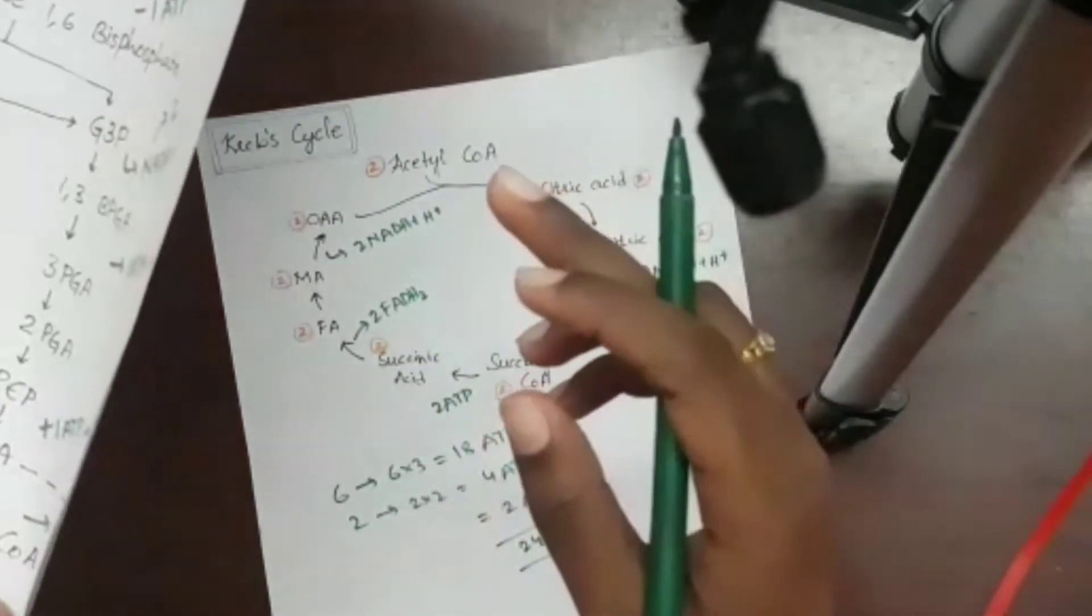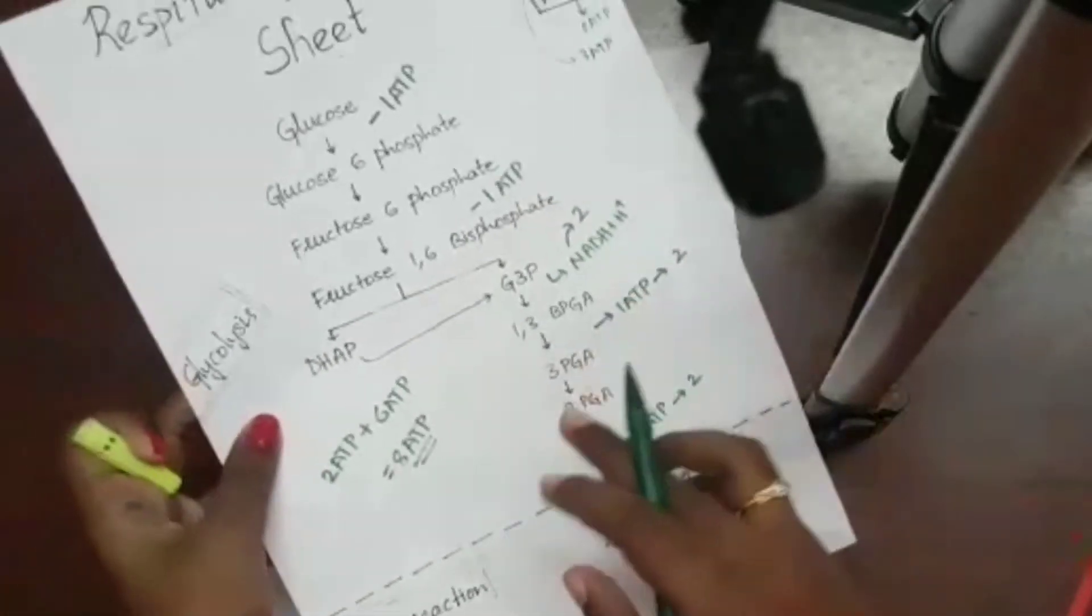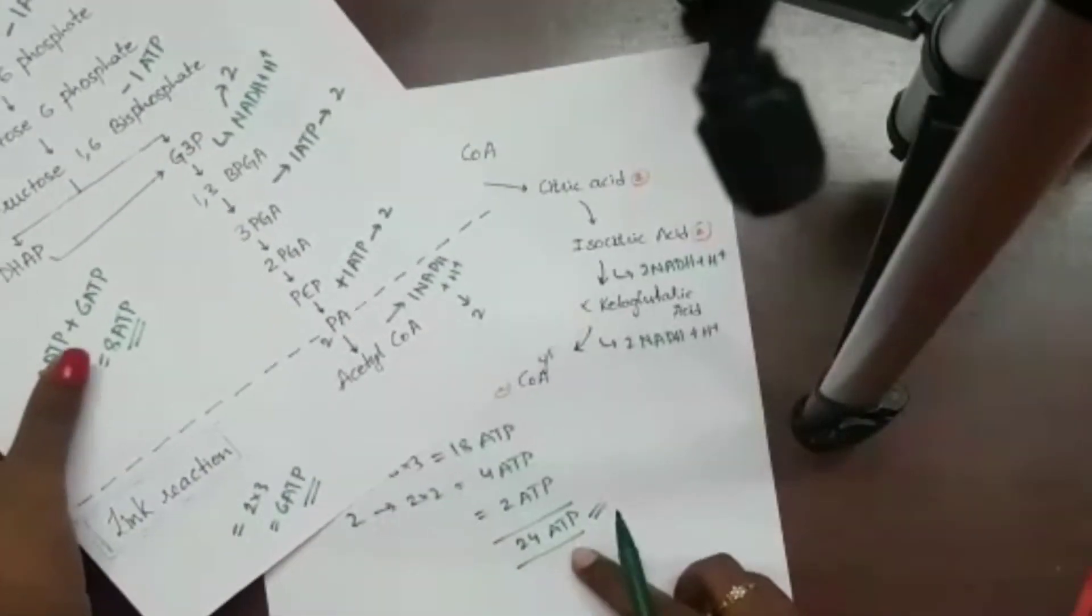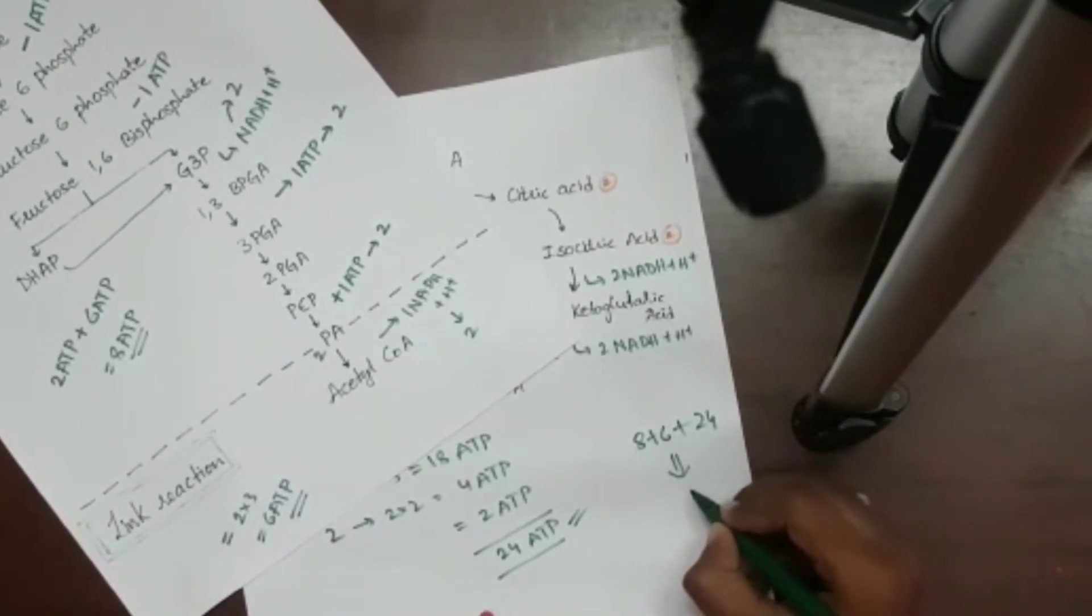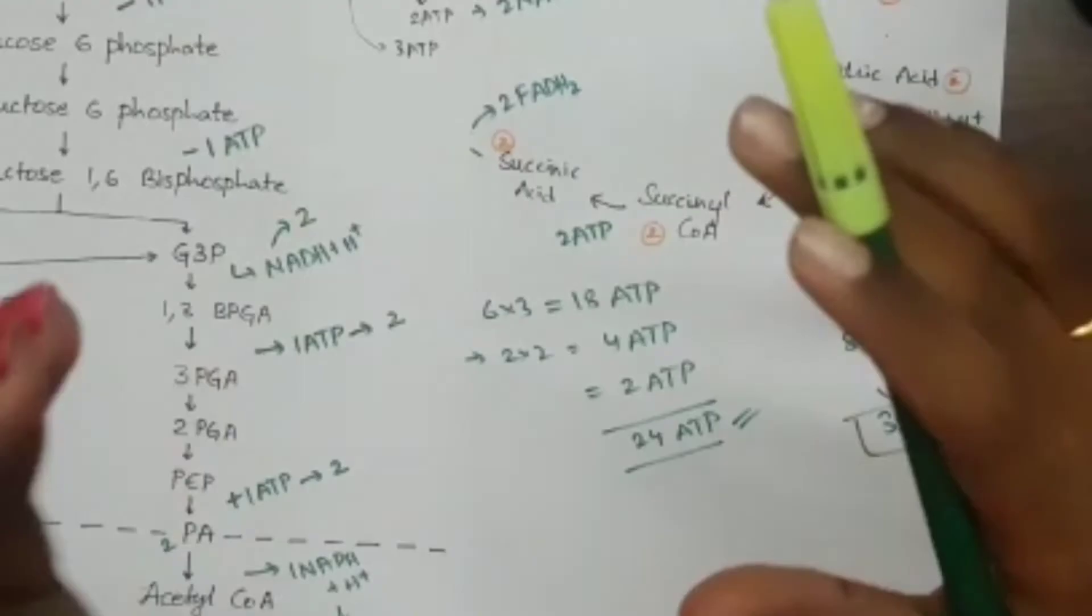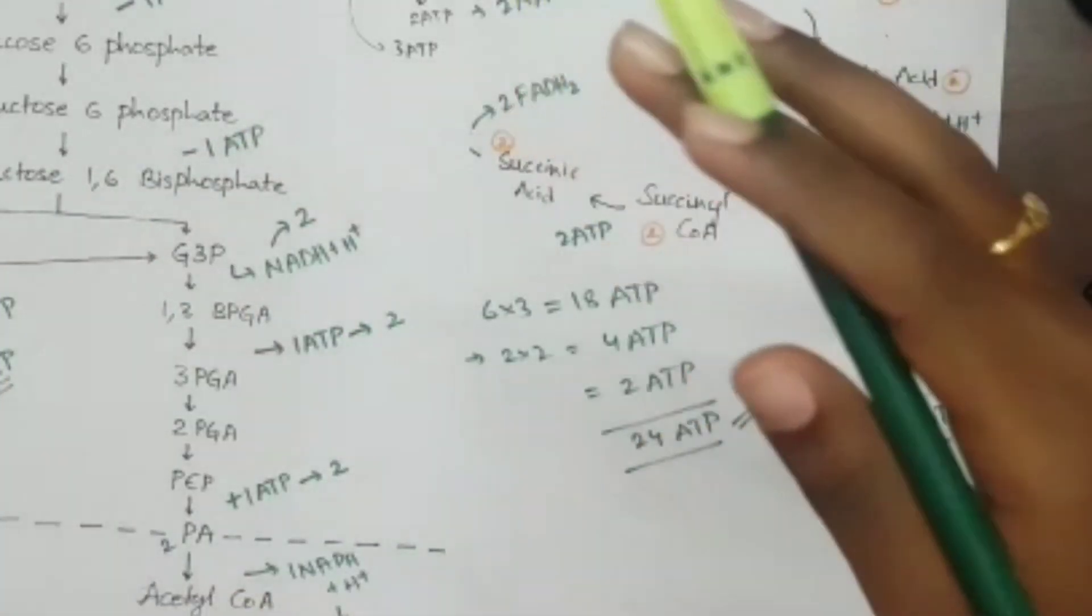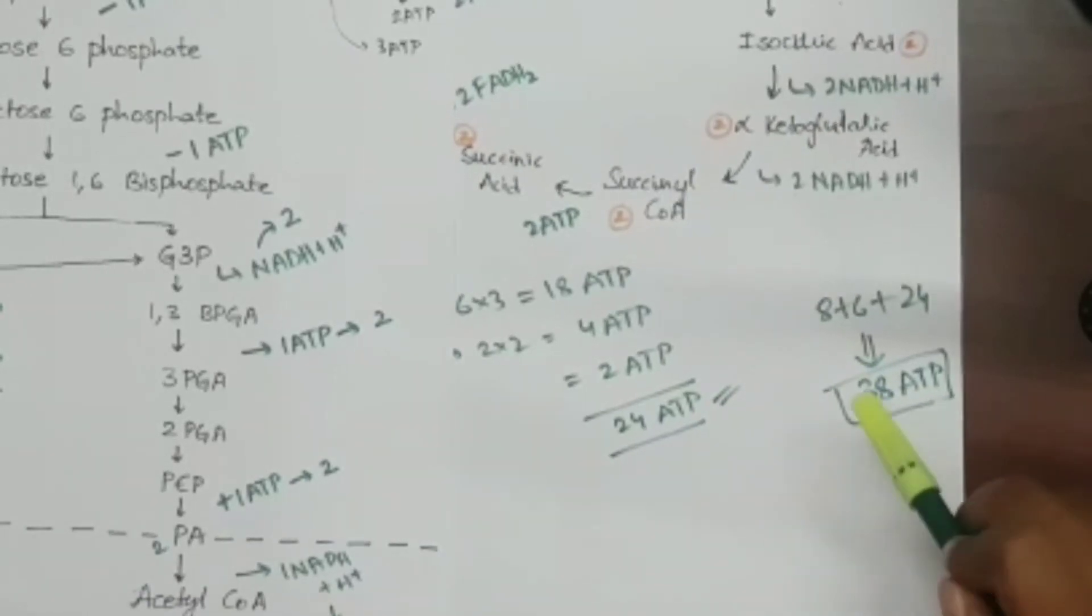If we calculate the total net gain of ATP, 8, plus 6, plus 24. This will come out to be 38 ATP. So the net gain of ATP in whole respiration process is 38 ATP.